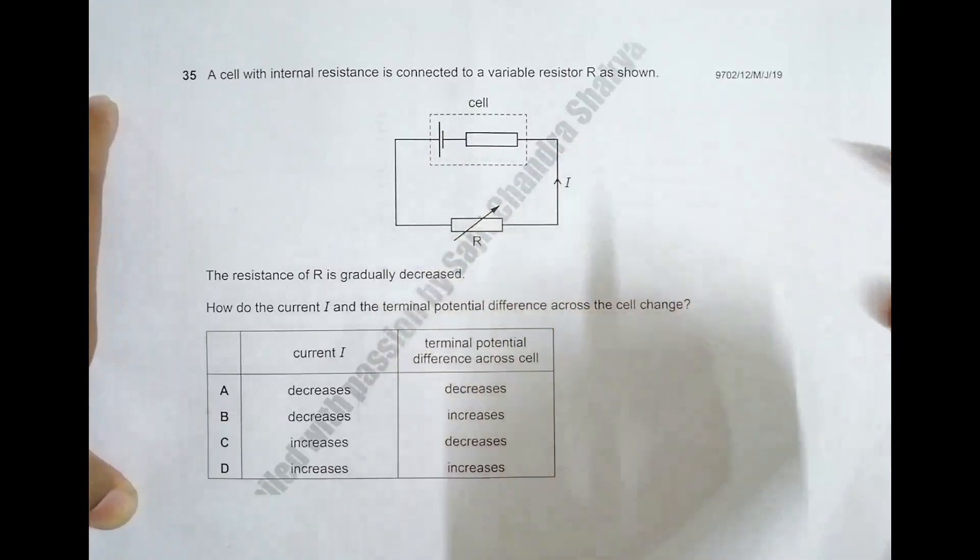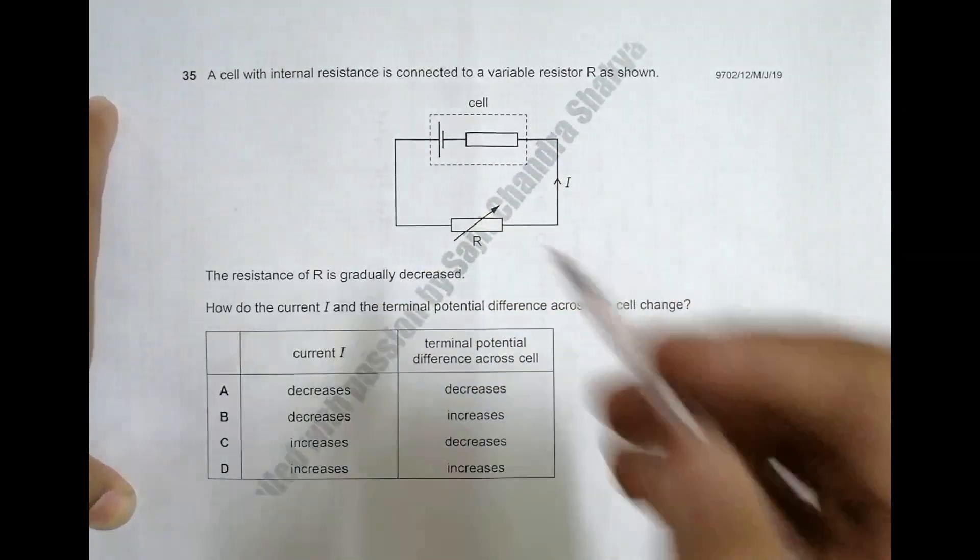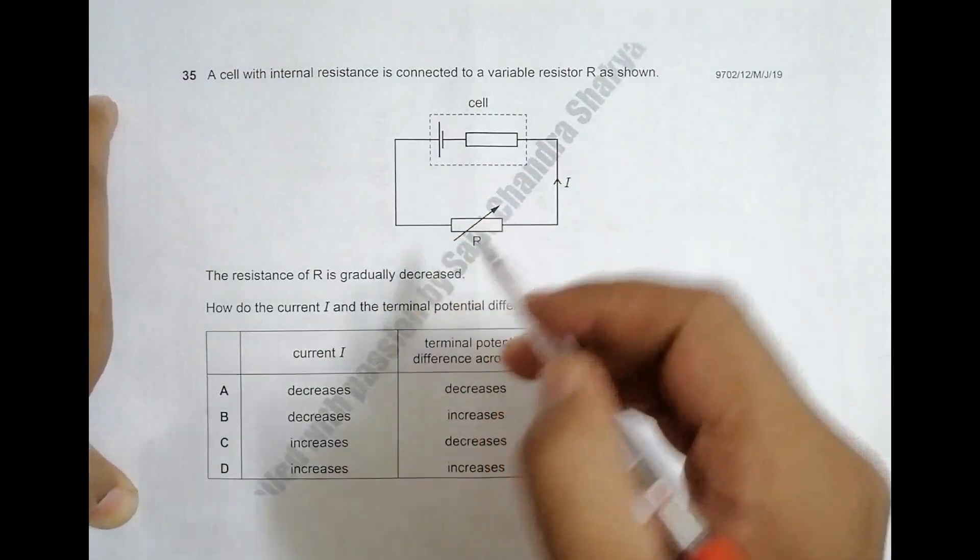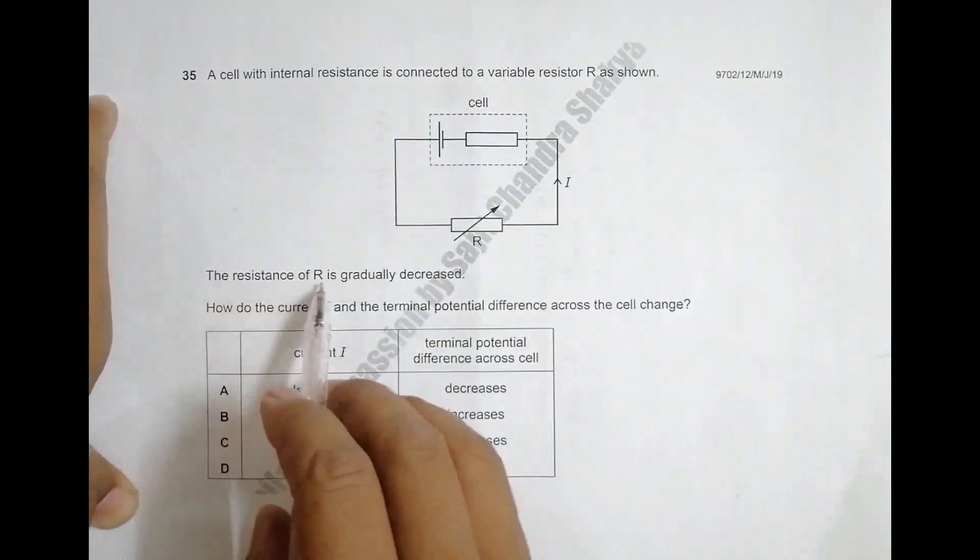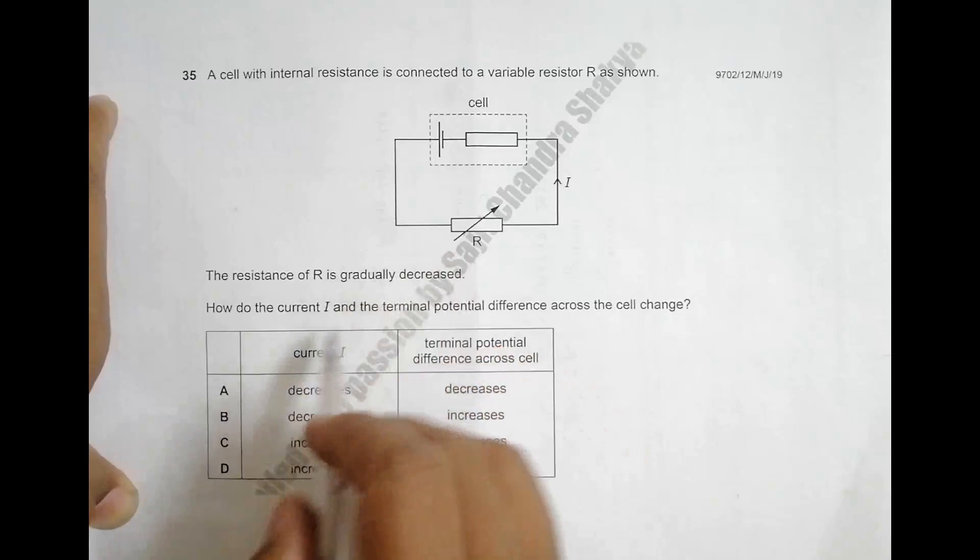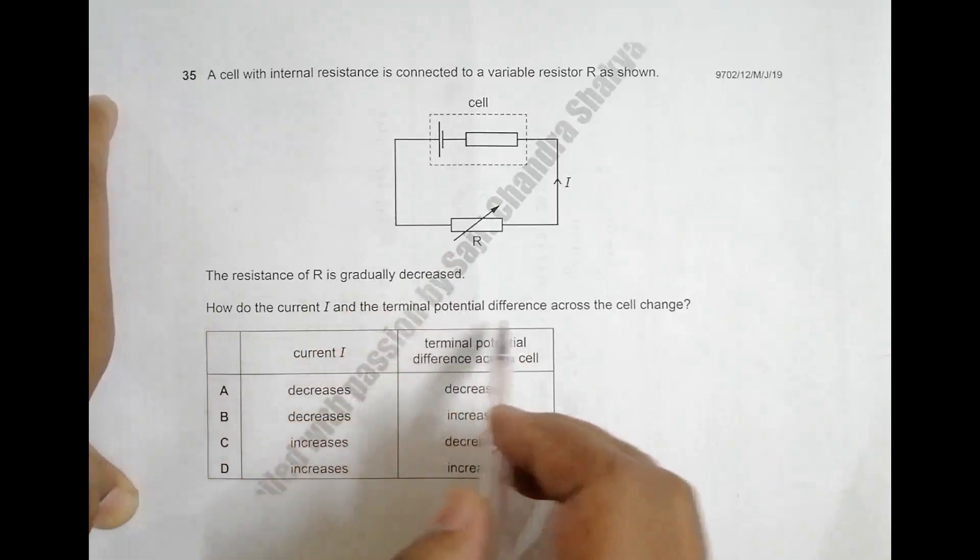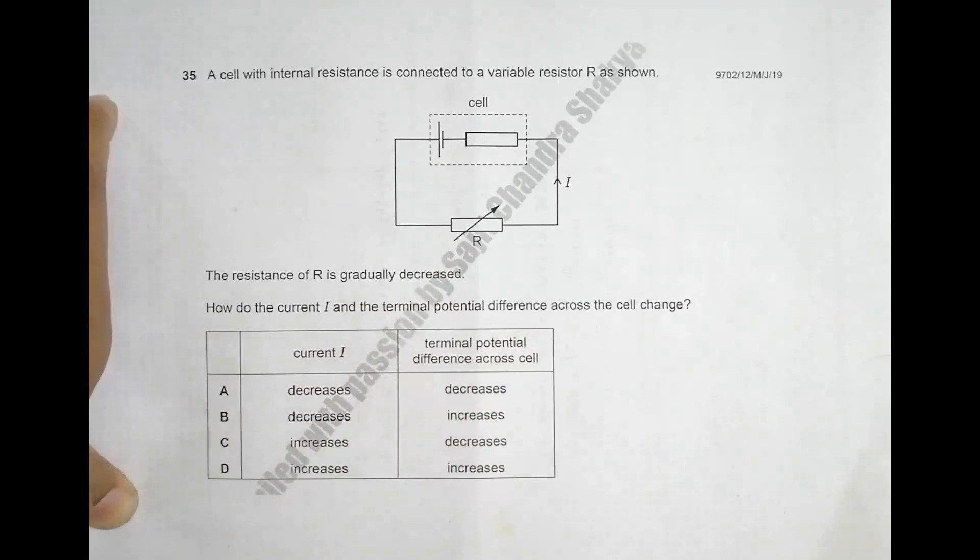We have a cell with internal resistance and a resistor whose resistance can be varied. This symbol shows that it can be varied. The resistance of R is gradually decreased, so we decrease the value of R. How do the current I and the terminal potential difference across the cell change?